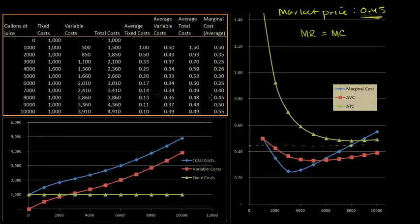Now we can even see it on our table. When does our marginal cost equal 45 cents? It equals that when we produce 8,000 gallons of our juice.